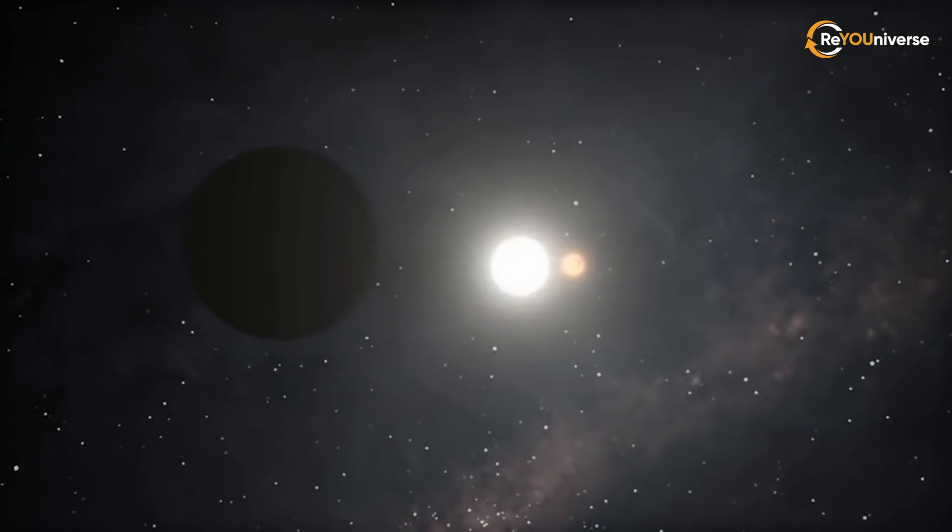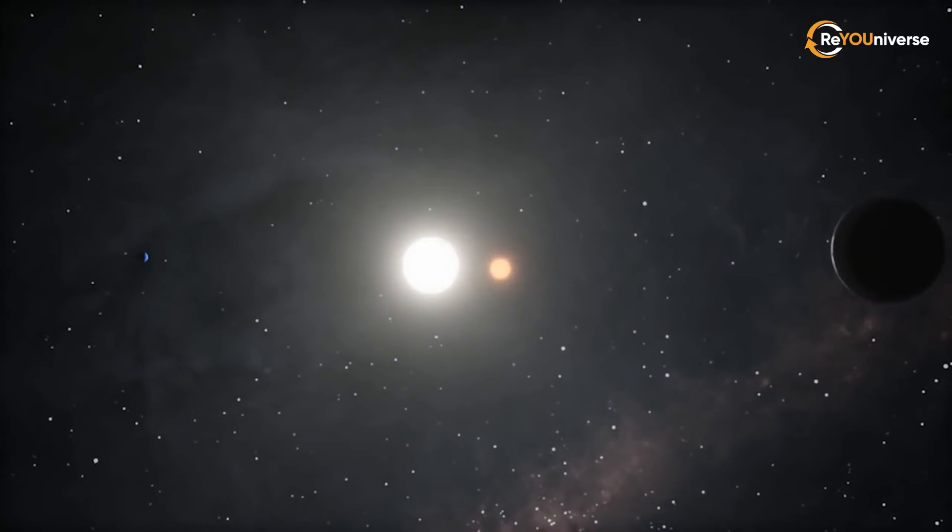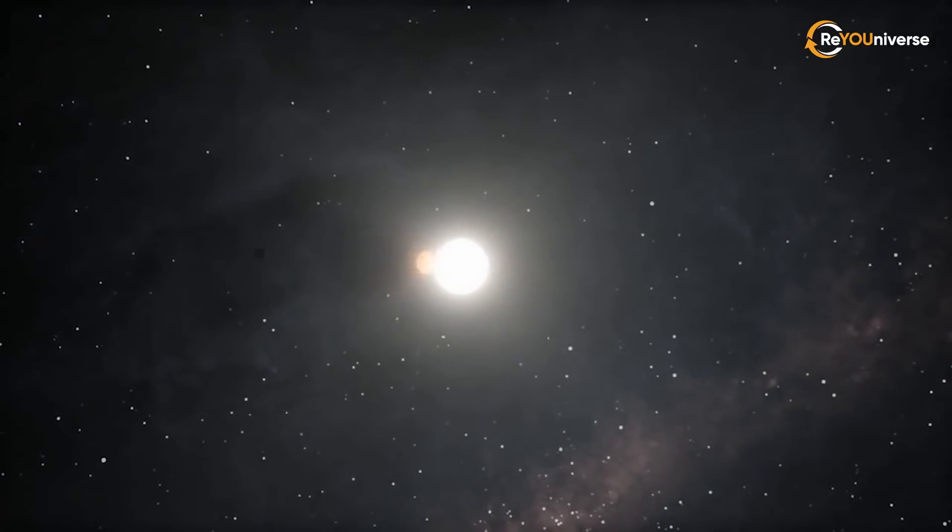Under these conditions, everything would be in a perfect alignment for the Earth to orbit the two suns. The only question is whether our planet would have formed in the first place in a binary star system.